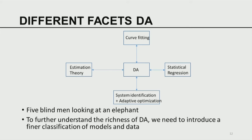Different facets about DA all in one place now: DA can be looked at as curve fitting, estimation theory, statistical regression, and system identification and adaptive optimization. Looking at DA is like five blind men looking at an elephant — a person in curve fitting looks at curve fitting only, a person in statistical regression considers statistical regression only. Our job is to bring the big elephant together. The sum — data assimilation — is greater than the parts. To further understand the richness of data assimilation, we need to introduce further classifications of both models and data.